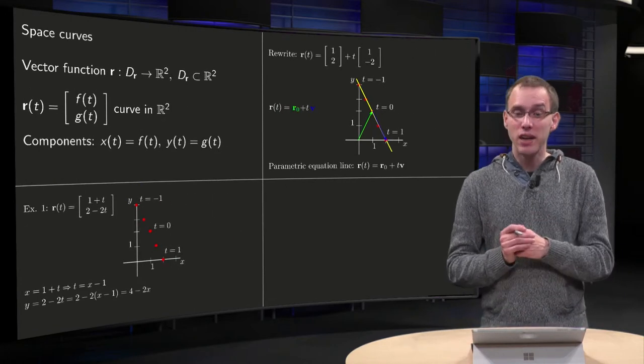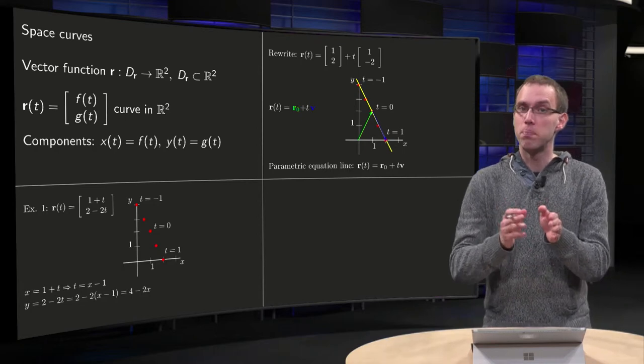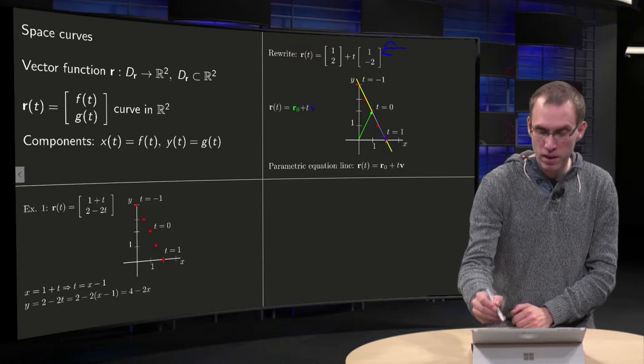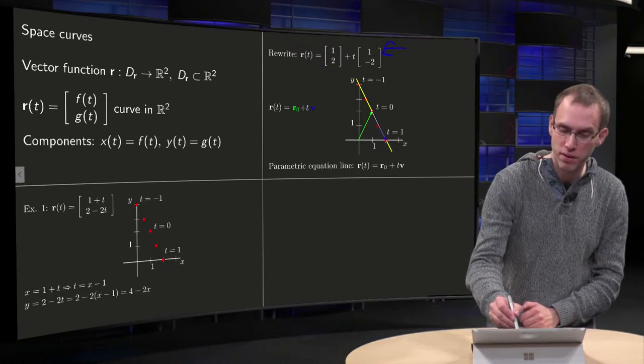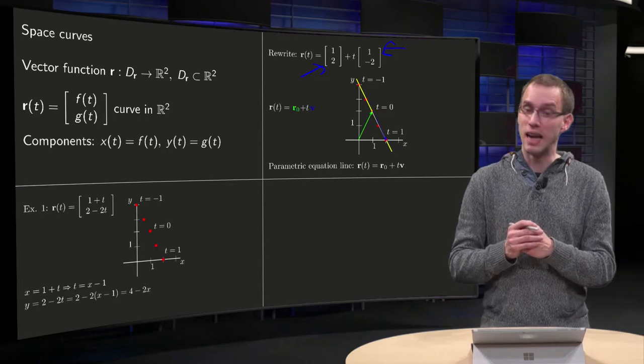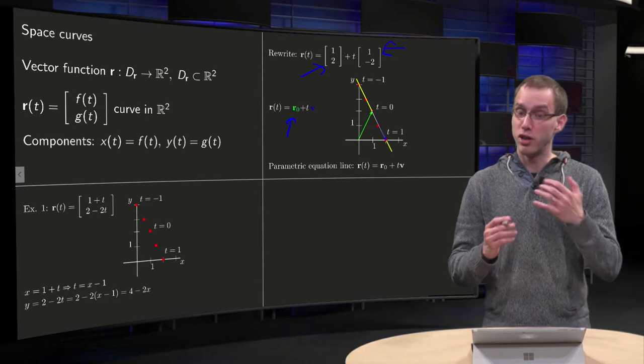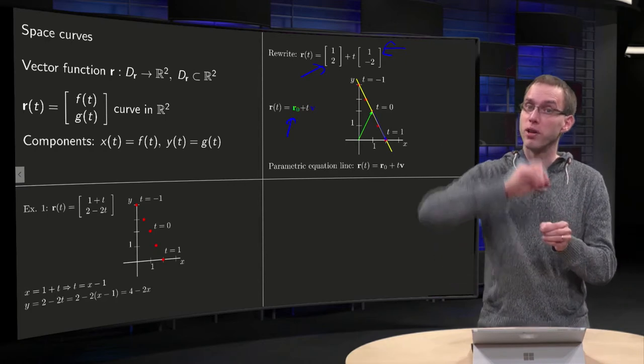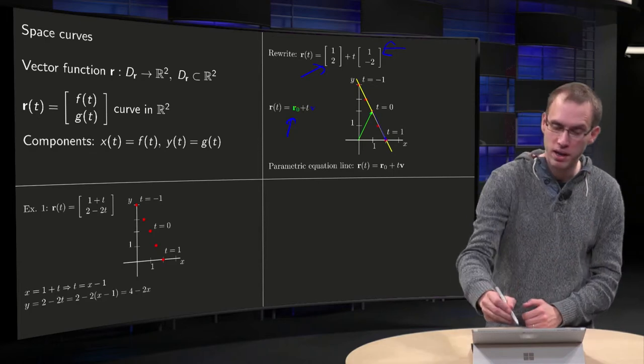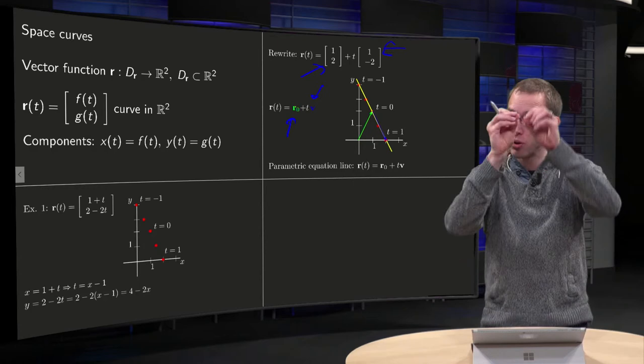We can rewrite our R of T slightly as follows. You take apart everything with the T in a vector over here, and everything without the T in a vector over here. And this is a general way to write a line. It is of the form R0, where R0 is a vector from the origin towards a point on the line, plus T, our parameter, times V, where V is the direction vector, a vector on the line.